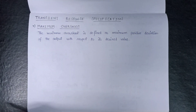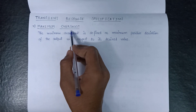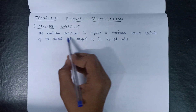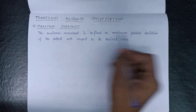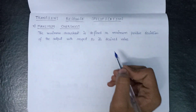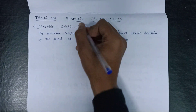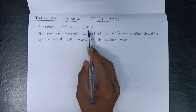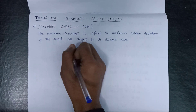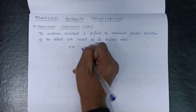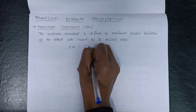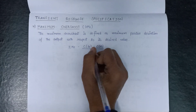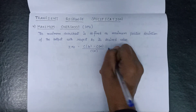Welcome all. In this lecture we are going to learn about maximum overshoot, which is the fourth specification of transient response. The maximum overshoot is defined as the maximum positive deviation of the output with respect to its desired value. Maximum overshoot is denoted by the symbol %MP, and the formula for its calculation is given as: %MP equals C at peak time Tp minus C of infinity, divided by C of infinity, multiplied by 100%.